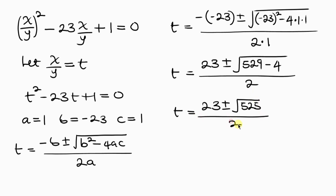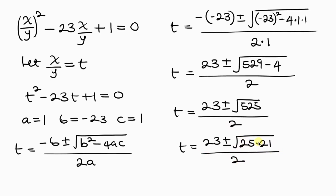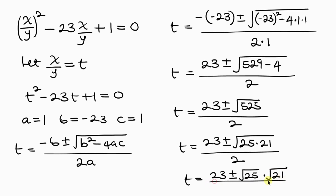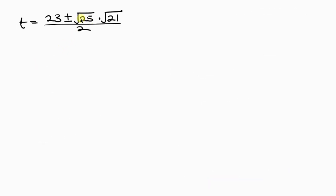Our next step is to split this. The square root of 525 is the same as the square root of 25 times 21. This simplifies to the square root of 25 times the square root of 21. We know the square root of 25 is 5, so this becomes 23 plus or minus 5 root 21, all over 2.